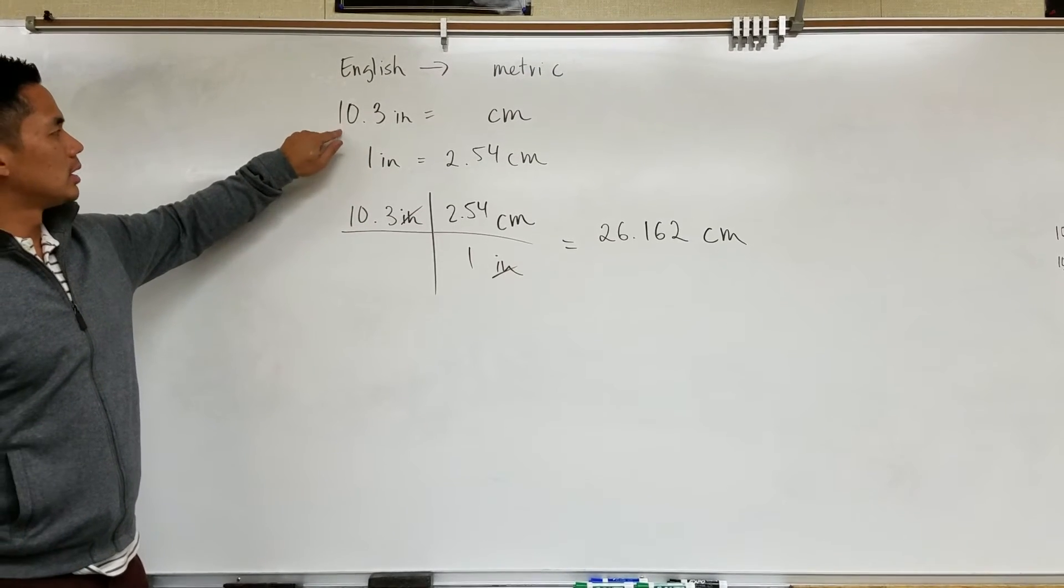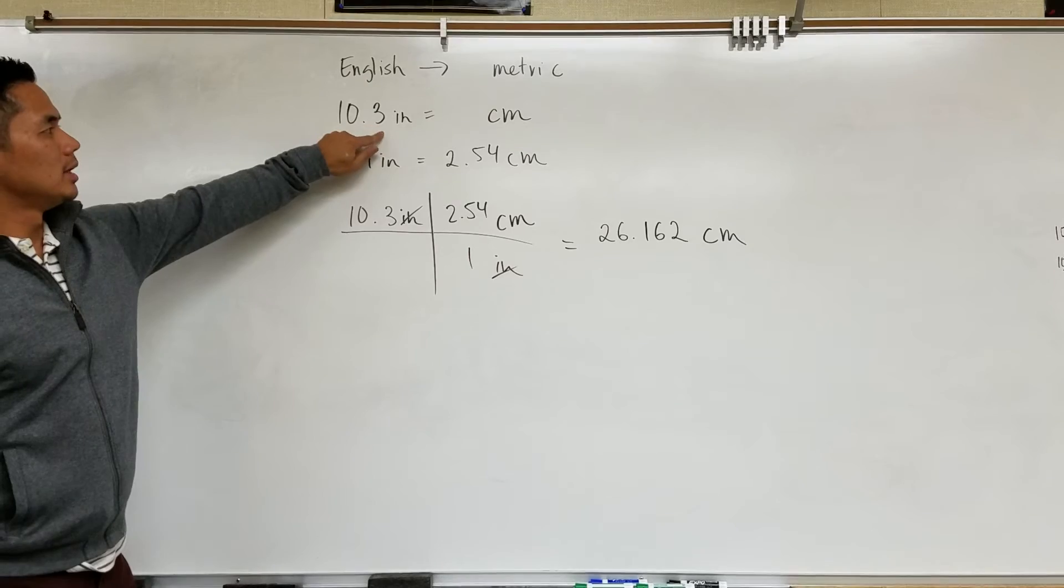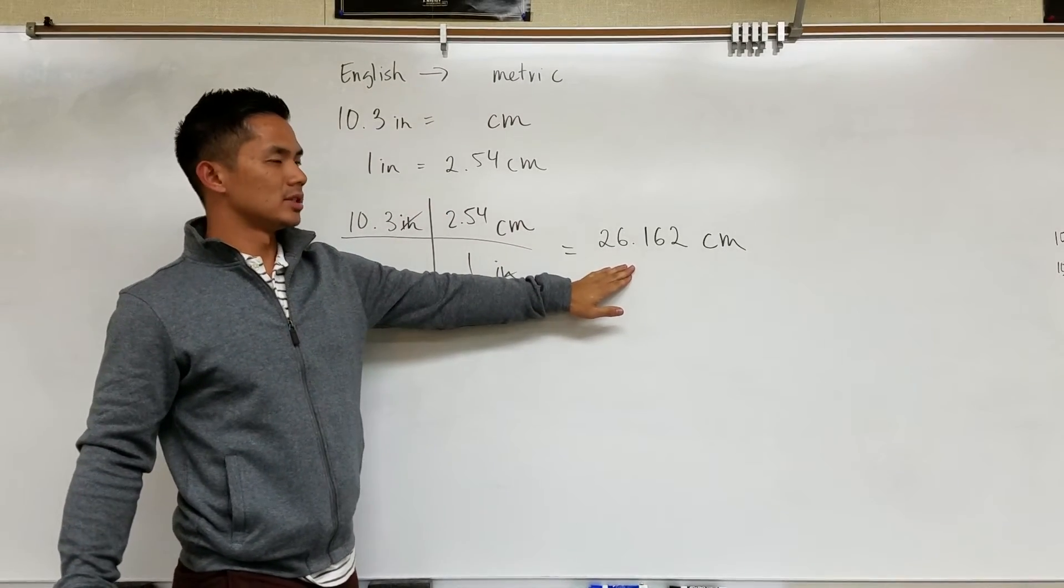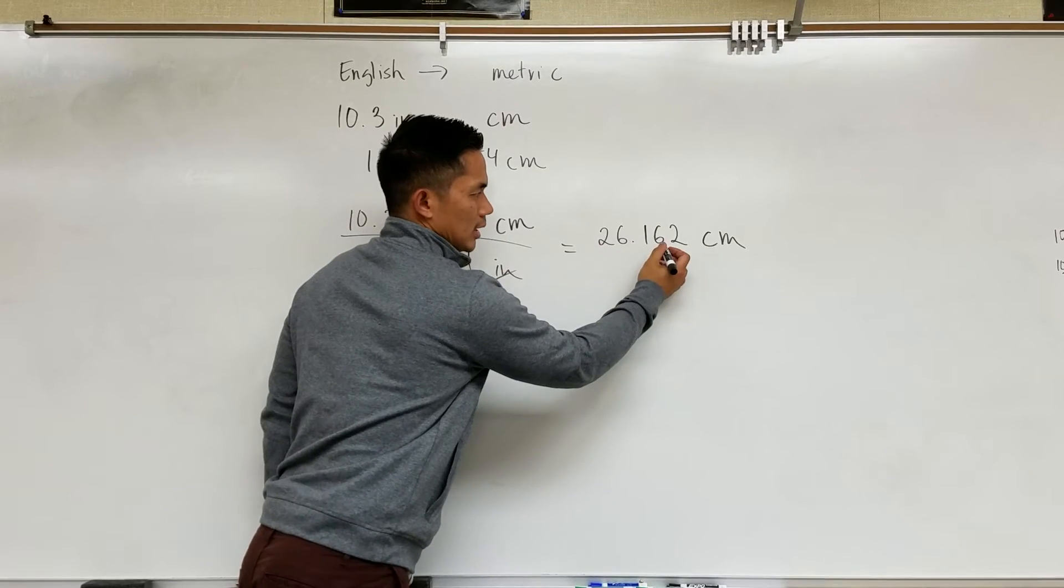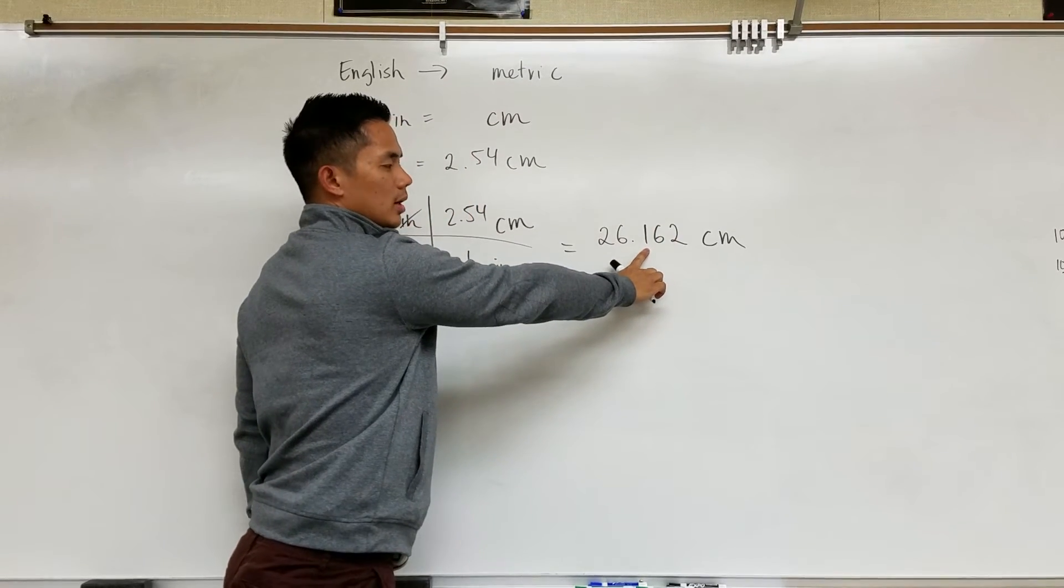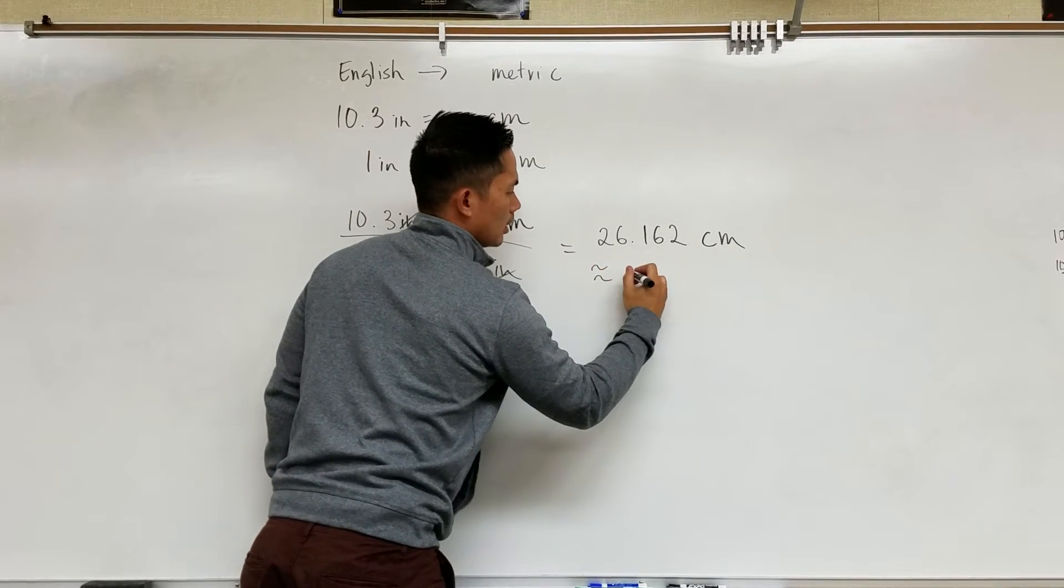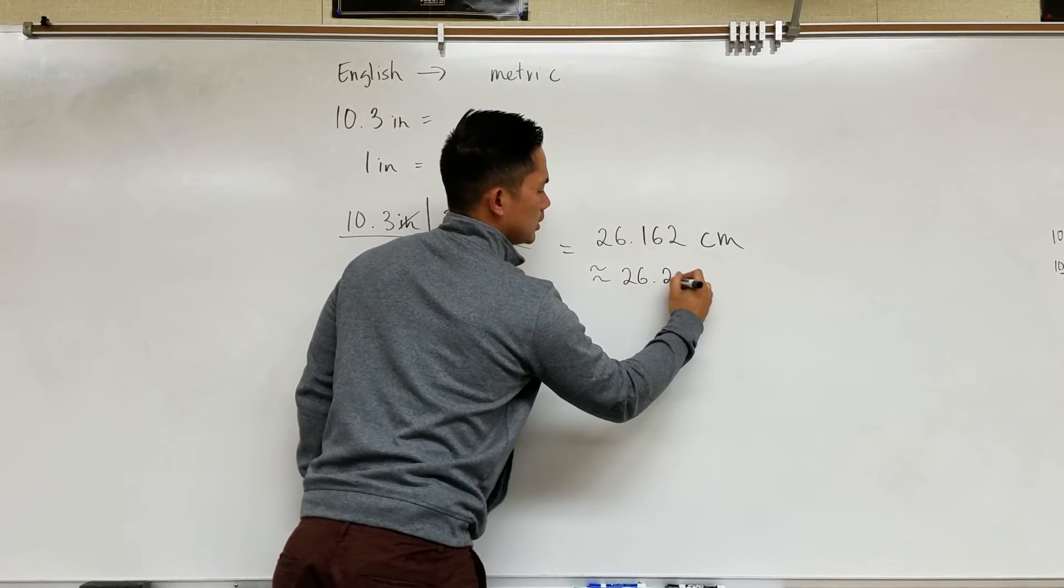Since the question gives us 3 sig figs, our answer should be 3 sig figs. So this 6 will round the 1 up to a 2. So this will be 26.2 centimeters.